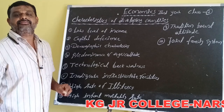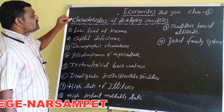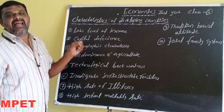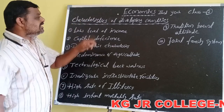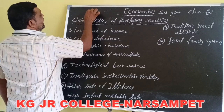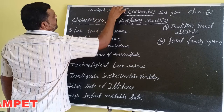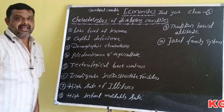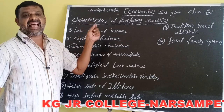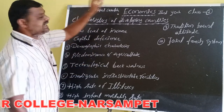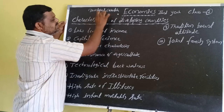Based on per capita income, standard of living, and availability of natural resources, countries are divided into two types: developed countries and developing countries.